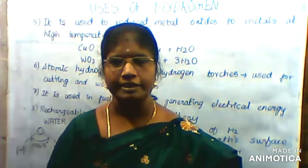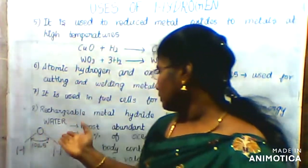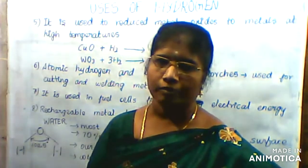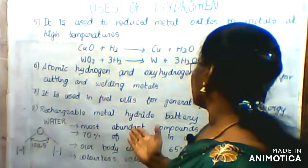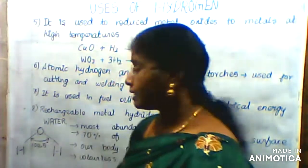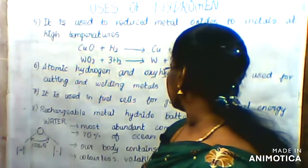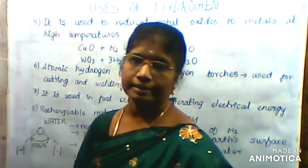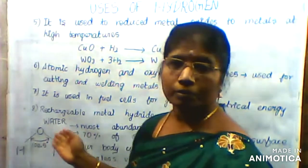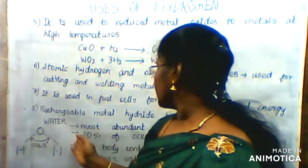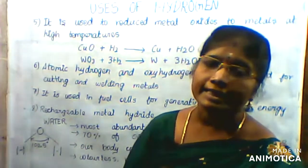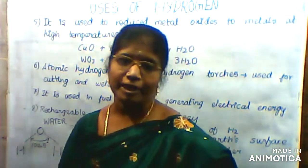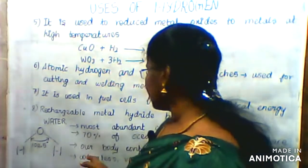Water is very abundant. It is a compound and it is very abundant on the surface of the Earth. In the body, it is also very abundant. For example, water is very abundant everywhere.